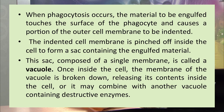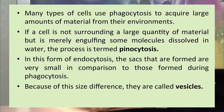When phagocytosis occurs, the material to be engulfed contacts the surface of the phagocyte, causing the outer cell membrane to indent. The indented cell membrane is pinched off inside the cell to form a sac — called a vacuole — containing the engulfed material. In pinocytosis, because the material is liquid, the sac is much smaller and is called a vesicle. Thank you learners, I hope you have learned something in this class.